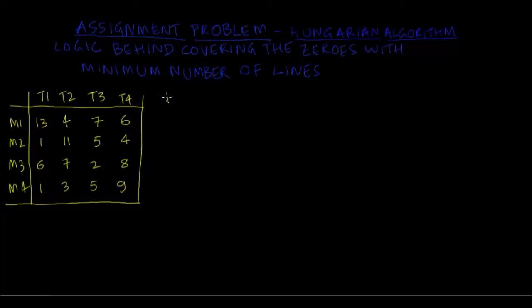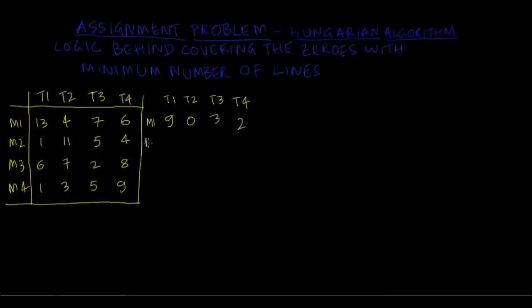In the first row, the least number is 4, so I will deduct 4 from all the numbers including itself to get 9, 0, 3, 2. I started without explaining the meaning of all these things, assuming you already know what an assignment problem is. Here we are assigning 4 tasks to 4 machines. If I assign a task to one machine, I cannot assign other tasks to the same machine.